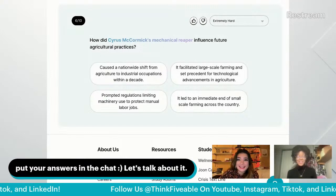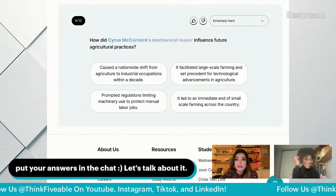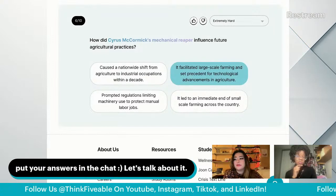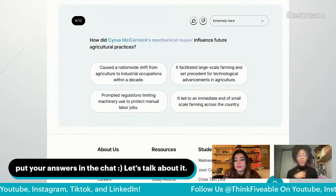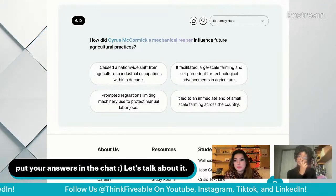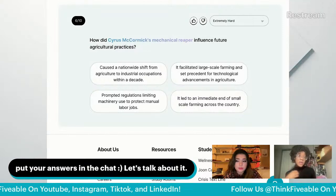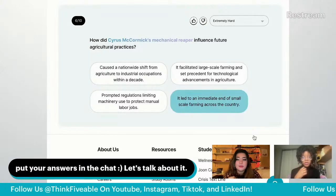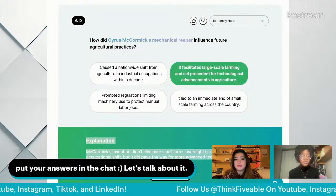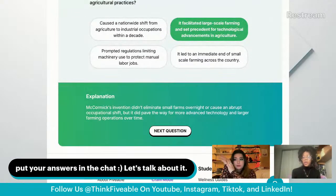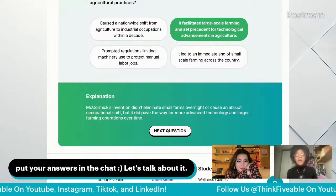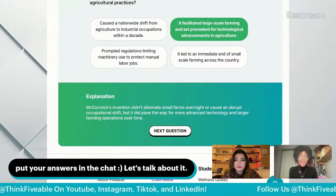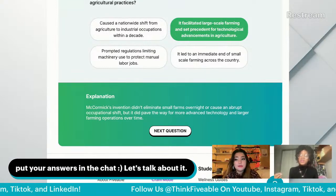Nobody ever talks about the mechanical reaper — including me. How did Cyrus McCormick's mechanical reaper influence future agricultural practices? It didn't cause an immediate nationwide shift from agriculture to industrial occupations, nor an immediate end to small-scale farming. The correct answer is B — it facilitated large-scale farming and set a precedent for technological advancements in agriculture. It didn't eliminate small farms overnight, but it paved the way for more advanced technology. You could also connect it to the early beginnings of an industrial movement in the United States before the Industrial Revolution.